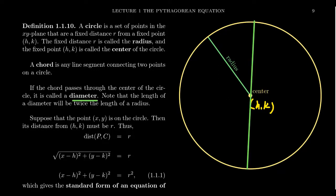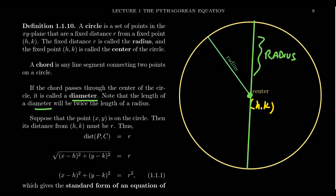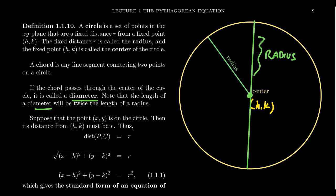The diameter is the longest possible chord you can have for a circle. If you take half of the diameter, that's just a radius, and the midpoint of the diameter is just the center of the circle. So a diameter is twice the length of the radius. A little vocabulary about circles: centers, radii, diameters, and chords.